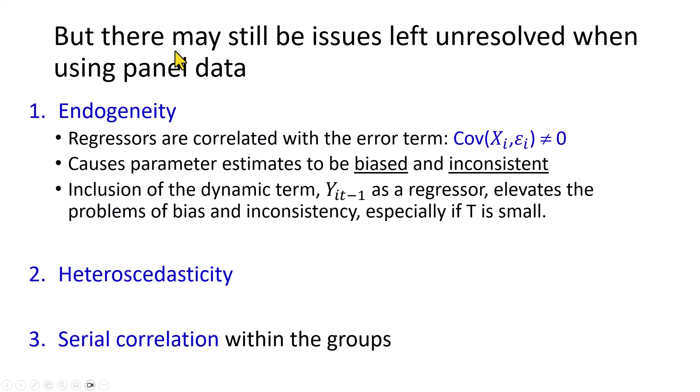But with all of that in play, there may still be issues left unresolved when using panel data. Top of which is endogeneity, which refers to the correlation between regressors and the error term. This problem causes parameter estimates to be biased and inconsistent.